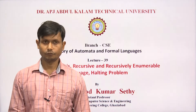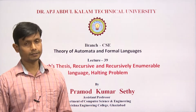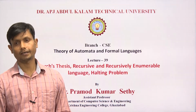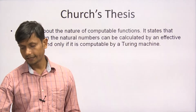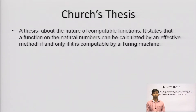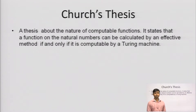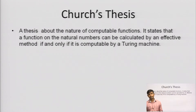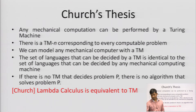We have already studied many problems of Turing machines. The Church-Turing thesis is saying something different — we are using lambda calculus. It states that any program or algorithm computed by a Turing machine relates to the nature of computable functions. It states that a function on the natural numbers can be calculated by an effective method if and only if it is computable by Turing machines.